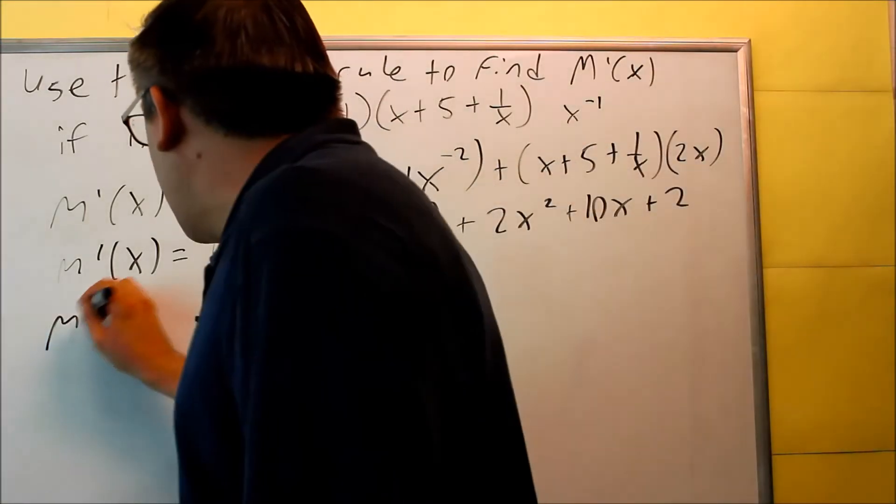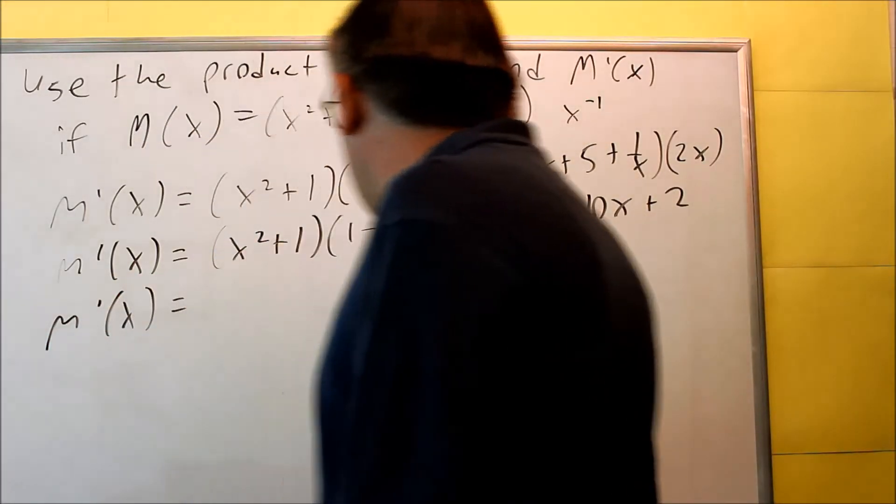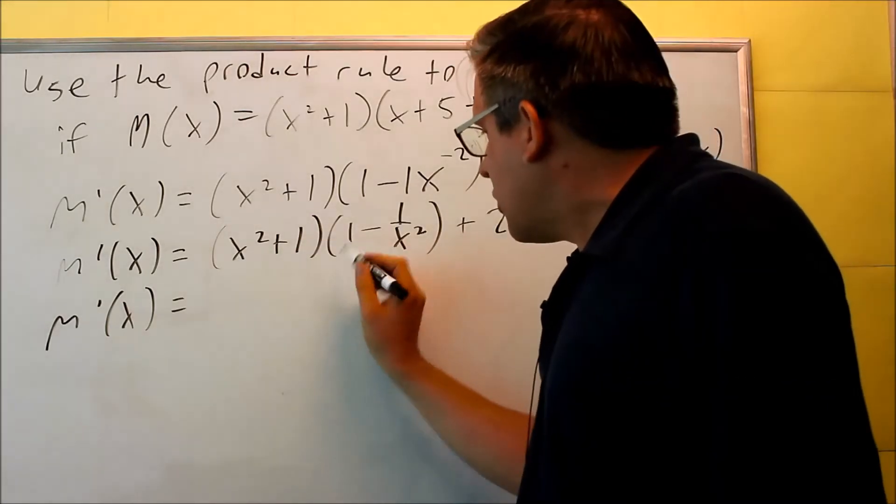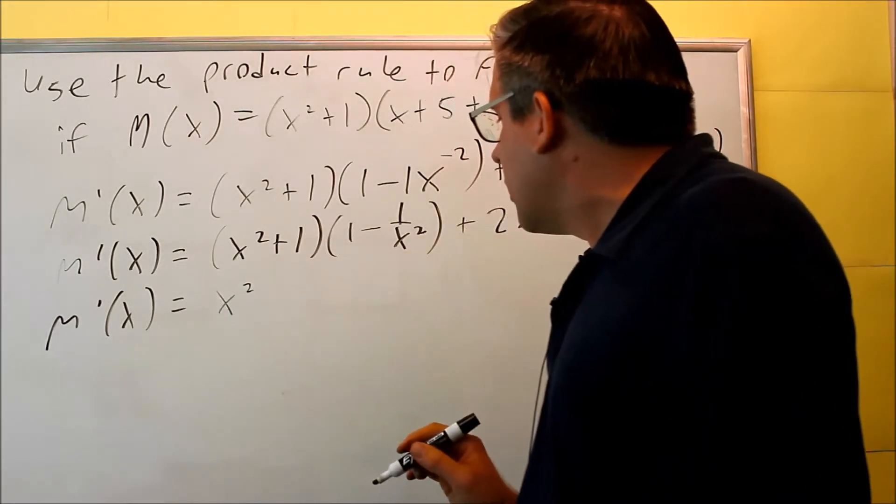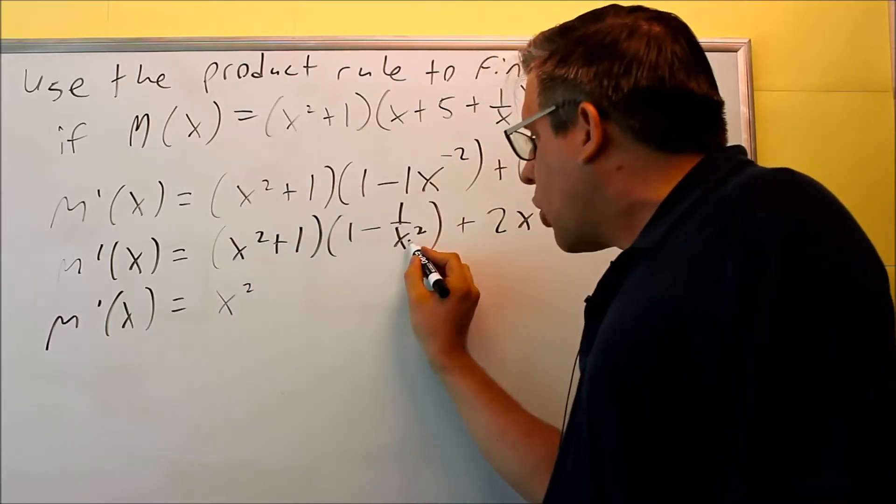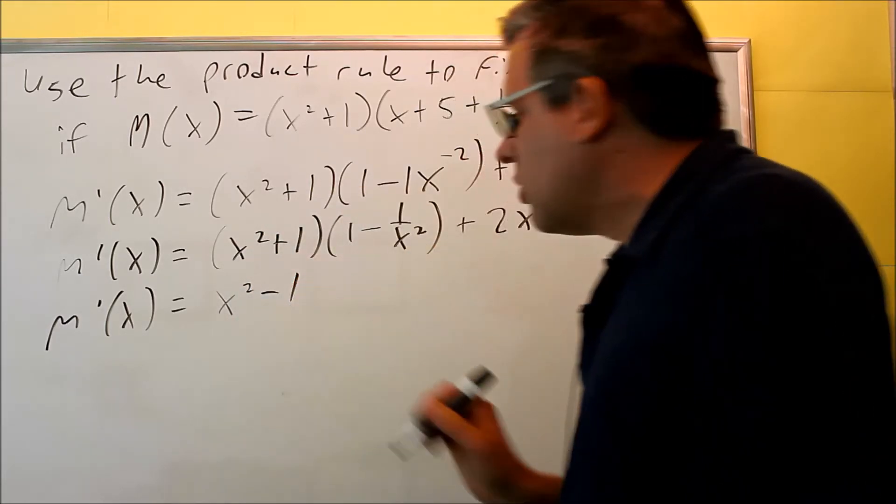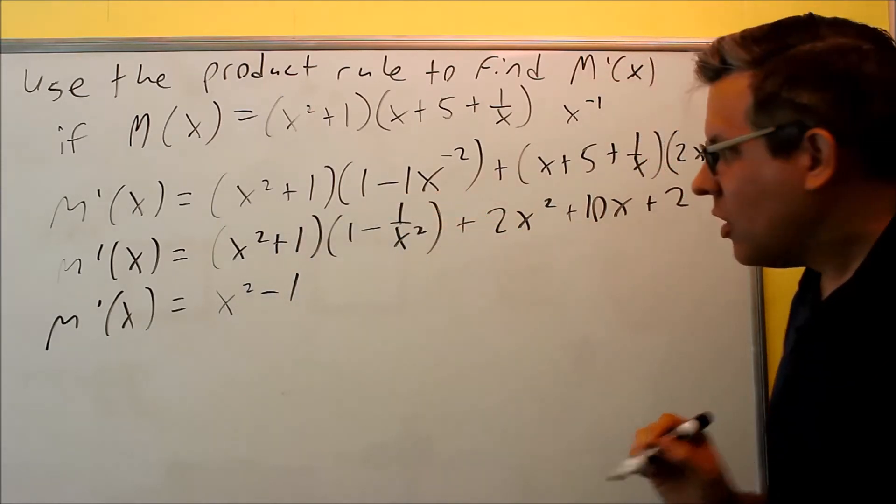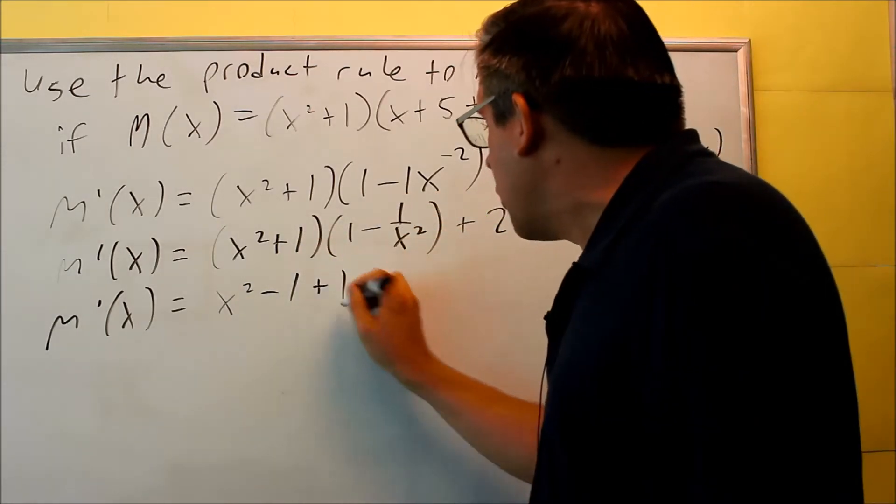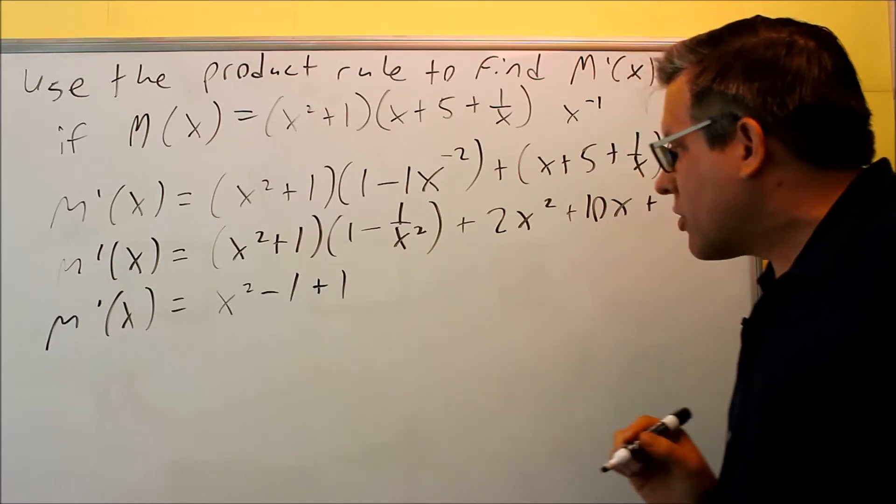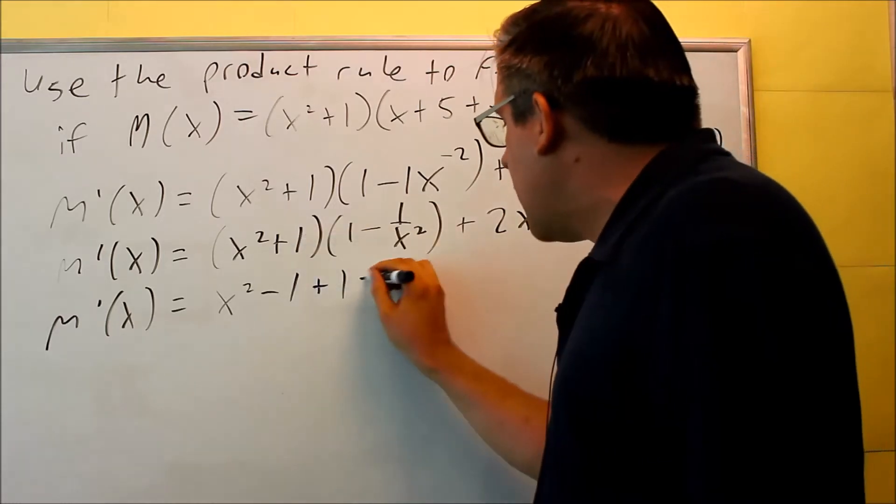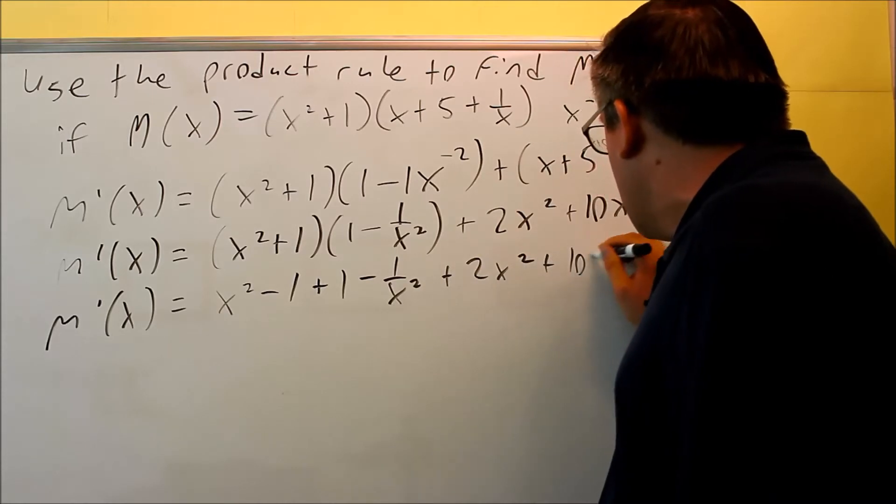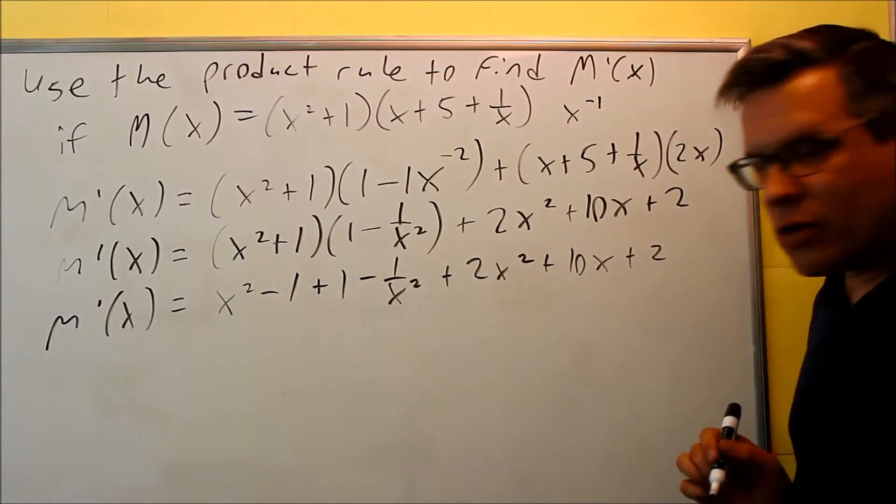Next I'm going to multiply out this one, I've got to do a foil on that, so I do this times this, so I get x squared, x squared times one over x squared, that's going to be a minus one only, when I multiply that, the x squareds cancel, do the inside ones, plus one, so now I get these, they'll cancel, and then I have minus one over x squared, and of course I have the rest of this here, and the last thing I'll do is combine all the like terms together.